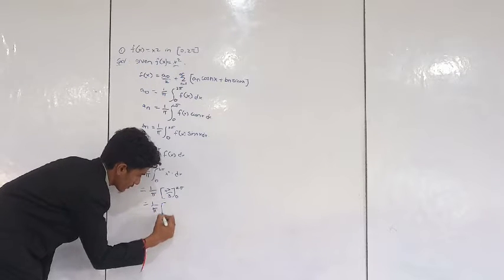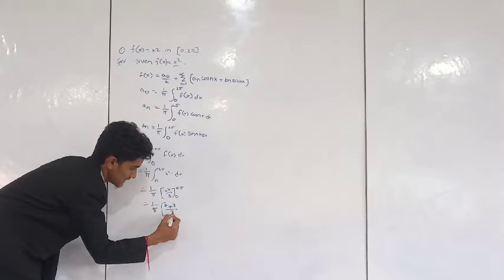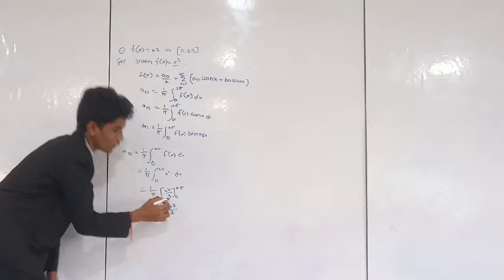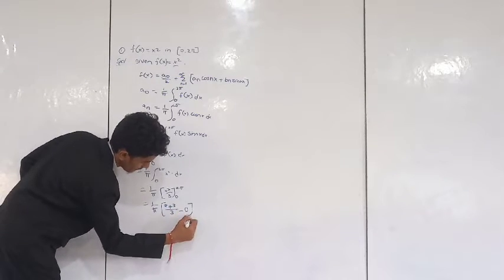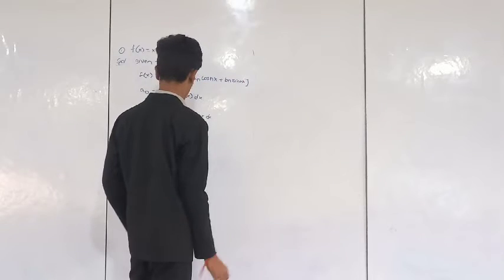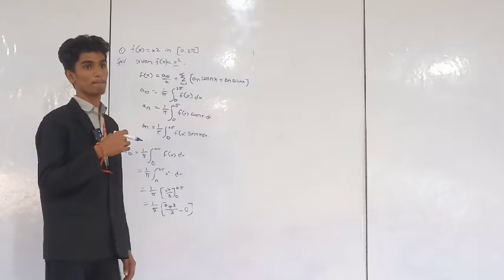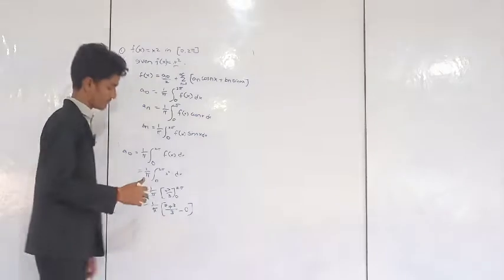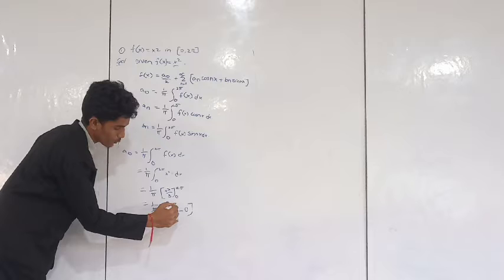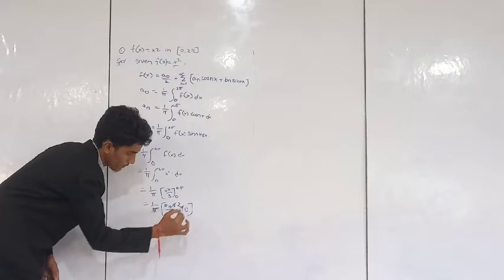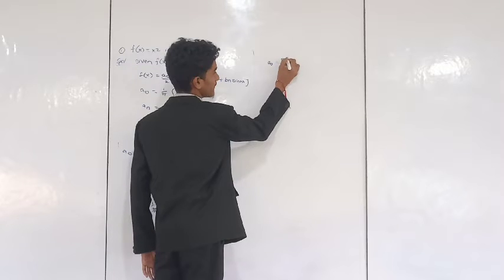1 by π times — 2π cubed is 8π³ by 3. When we substitute x = 0 we get 0, so minus 0. Here, one π in the numerator and denominator will cancel, giving π squared. Therefore A naught equals 8π² by 3.